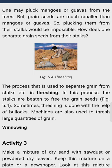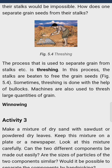Threshing में इन सारी डंडियों को पटका जाता है जिससे उनमें से दाने खुलकर बाहर आ जाते हैं, जैसा कि figure 5.4 में दिखाया गया है। कभी-कभार यह threshing करने के लिए bullocks यानि कि गाय-भैंस वगेरह का उपयोग किया जाता है। आज के जमाने में इसके लिए मशीन भी उपलब्ध है।